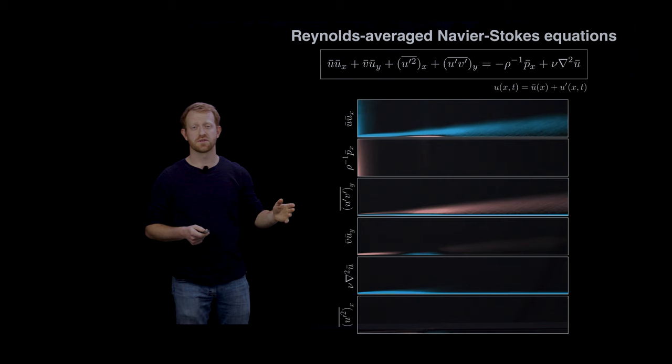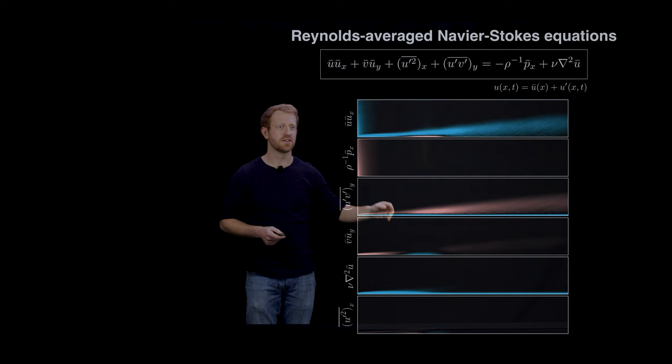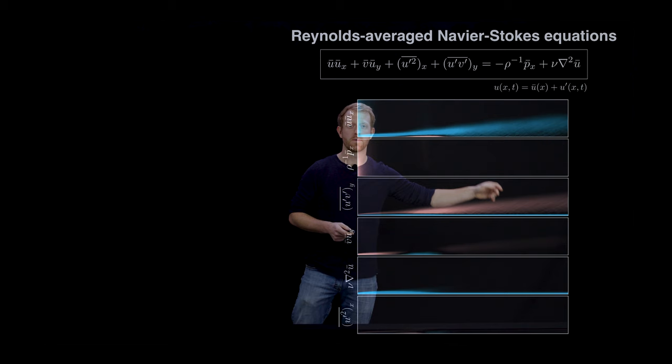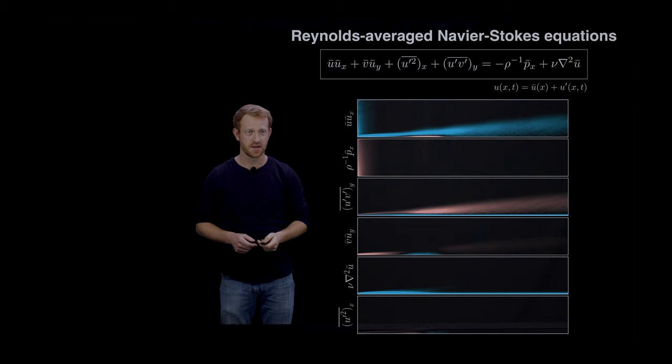We can immediately see that although most of these terms are important somewhere in the field, they're not all important everywhere. Usually the local description involves a balance between just a couple of terms. For instance, in a lot of the turbulent part of the layer this wall normal Reynolds stress is pretty significant but it's balanced out pretty evenly by the mean flow advection. There's this thin viscous layer near the wall which is also balanced by the Reynolds stress.